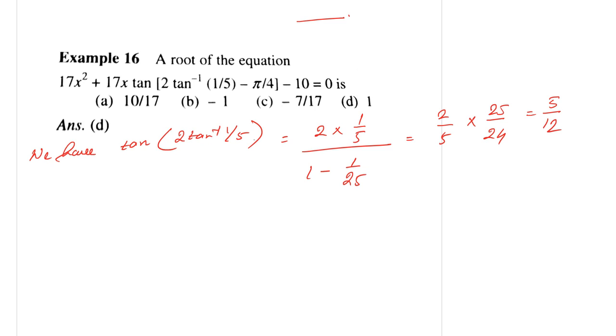So the given equation can be written as 17x² - 17x × (1 - 5/12)/(1 + 5/12) - 10 = 0. And this implies 17x² - 7x - 10 = 0.